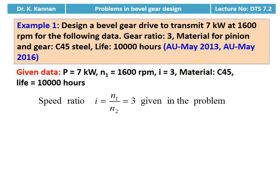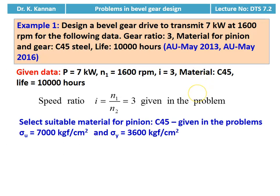First, we calculate the speed ratio — it is given in the problem as 3. Then the material for the pinion is also given as C45, with ultimate tensile strength 7,000 kilogram force per centimeter square and yield strength 3,600 kilogram force per centimeter square.